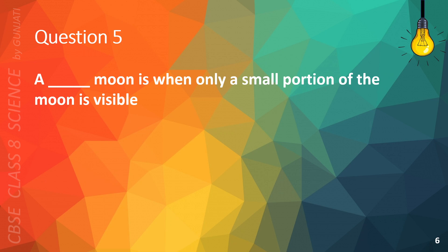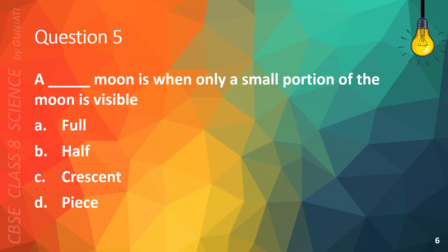Question 5. A blank Moon is when only a small portion of the Moon is visible. A. Full, B. Half, C. Crescent, or D. Peace. The correct answer is C. Crescent.